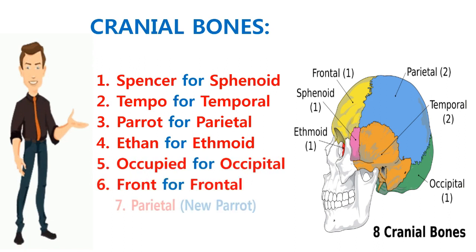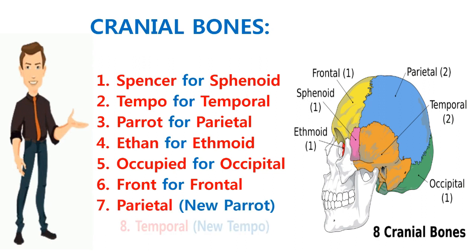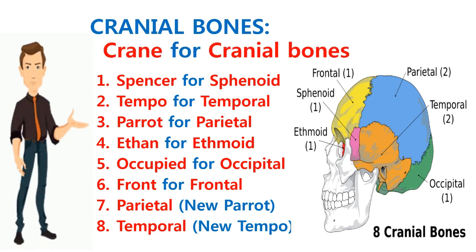Another parrot and tempo in the story helps us relate to the fact that there are two parietal and two temporal bones in our body. Crane used in the story helps us relate to the topic of cranial bones.